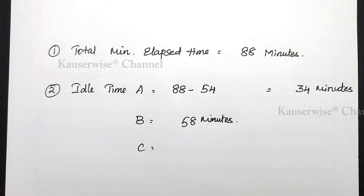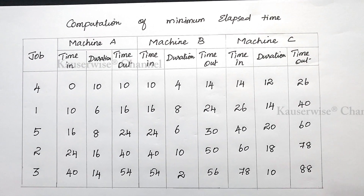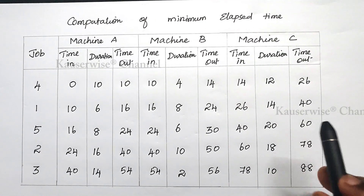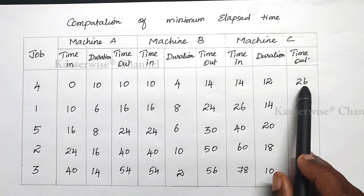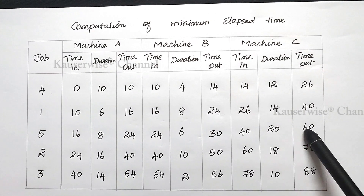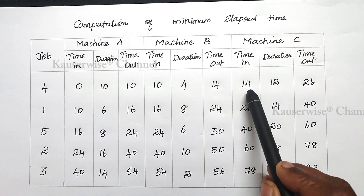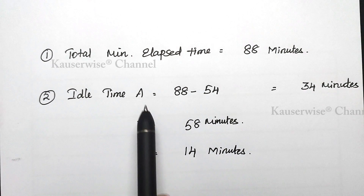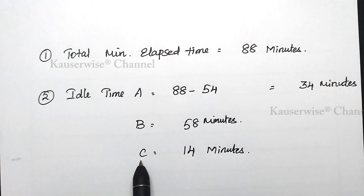For machine C, idle time is calculated in 2 ways. First: the end-time for the first job is 14 minutes — that is the initial idle time. Second: check idle time during the process by comparing current job in-time with previous job out-time: 26 vs 26 — no difference; 40 vs 40 — no difference; 60 vs 60 — no difference; 78 vs 78 — no difference. No idle time during the process. Total idle time for machine C = 14 minutes.